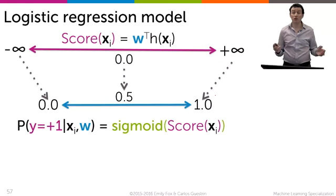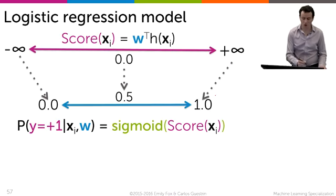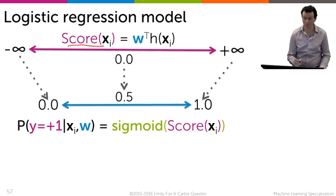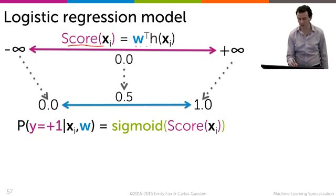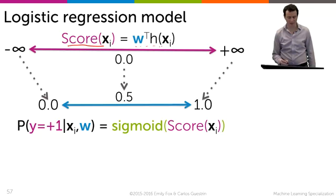Now we're ready to describe our logistic regression model. It takes a score as input that ranges from minus infinity to plus infinity and is actually w transpose h of xi.